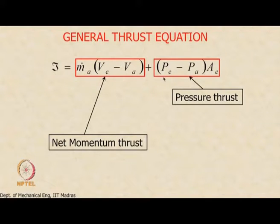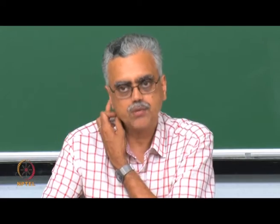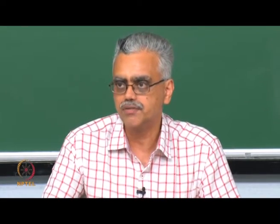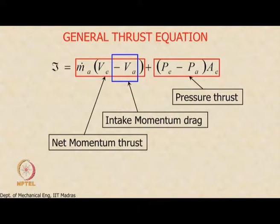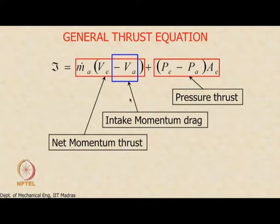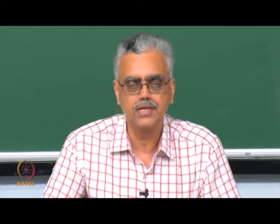If the flow is correctly expanded at the exit, Pe equals Pa and pressure thrust is zero. For a convergent nozzle, Pe cannot be below Pa — we cannot have over-expanded flow. The intake momentum drag, M-dot-A times Va, is a negative term acting as drag. Under cruise conditions, Va can be quite large, so we must ensure Ve is even larger to obtain sufficient thrust.